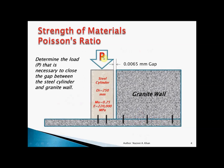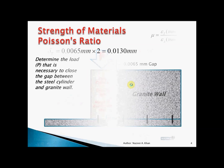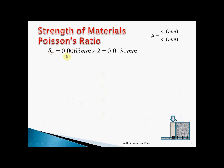Reviewing the problem: we want to find the load to apply on the steel cylinder to close the gap. That gap is in the transverse direction while the load is applied in the actual direction. Also important: when a cylinder is loaded, it deforms equally on both sides, so to get the total transverse deformation we take 0.0065 and multiply by 2.